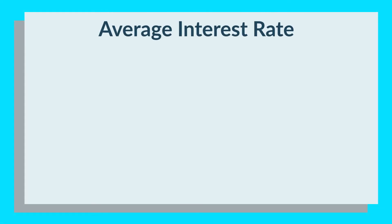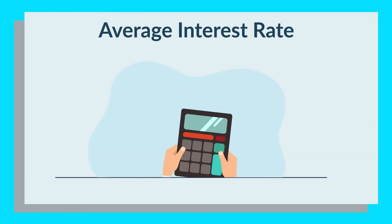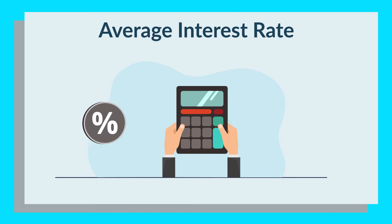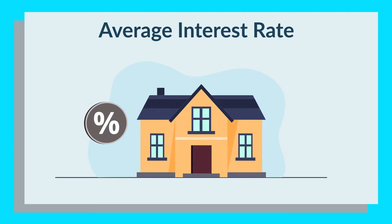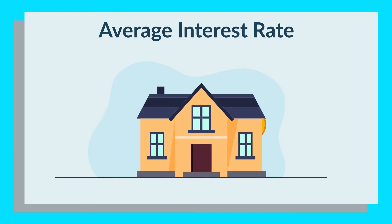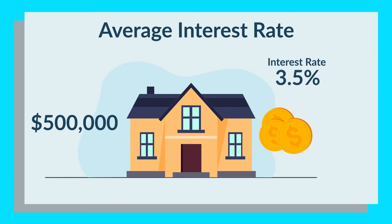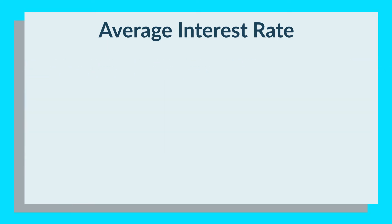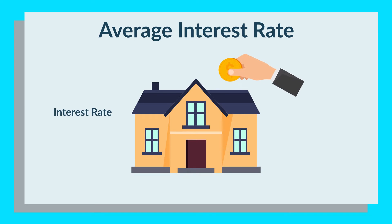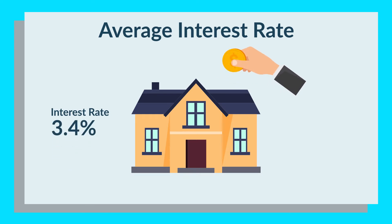Want to know the maths behind calculating how much you can save when your interest changes? Let's look at how a lower interest rate converts into dollars with a home loan amount of $500,000 over a 30-year term. The average interest rate is around 3.5%. If we were to refinance this home loan, you could reduce that percentage to 2.29%.